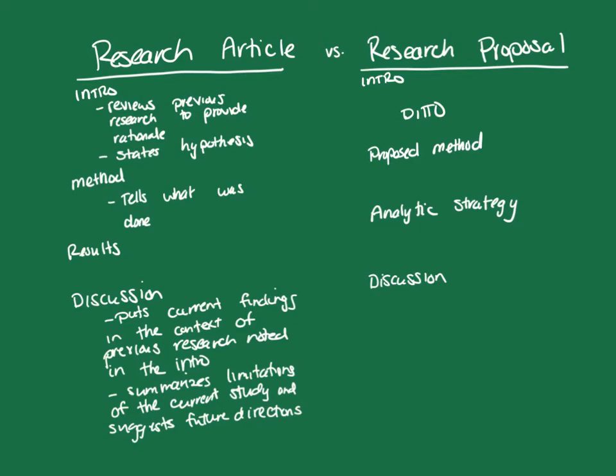The discussion in a research proposal is a little bit different. Here we tell the strengths of the research design being proposed that cause it to warrant conducting the study. We also note any limitations to the design — that is, any limitations to the proposed method and why these are being selected. For example, if we're doing an experiment, one limitation might be the artificiality when we manipulate a variable, but the trade-off is that the experiment lets us assess cause and effect.